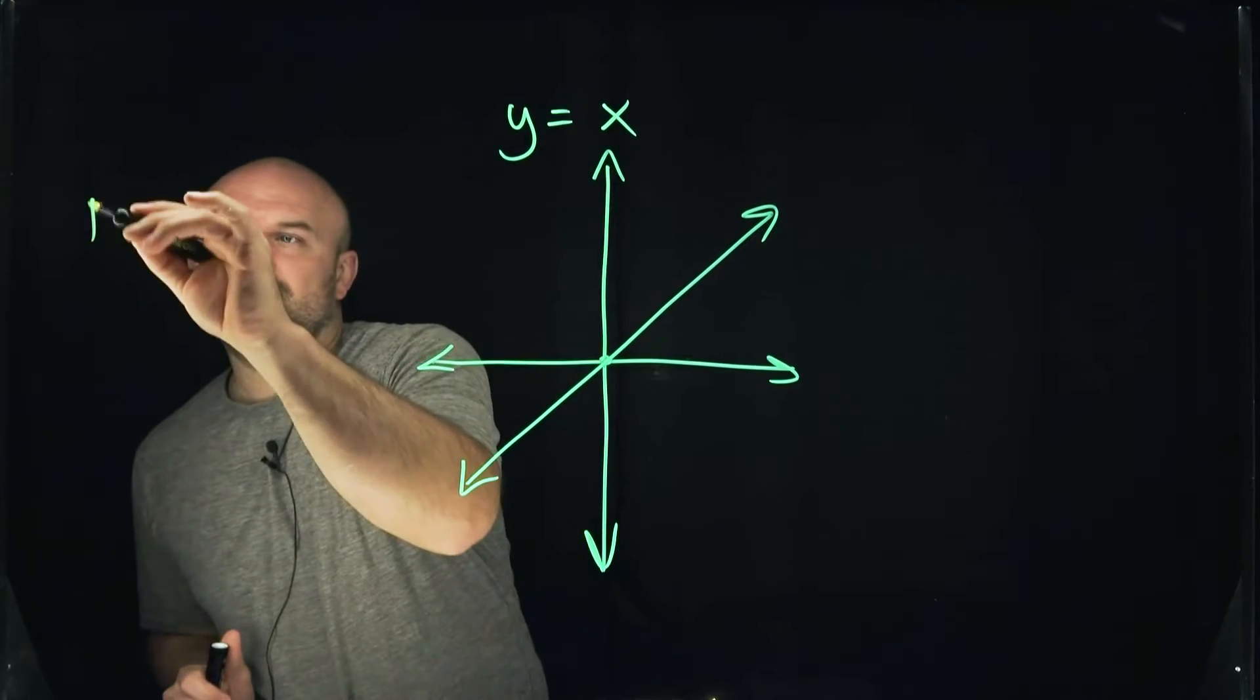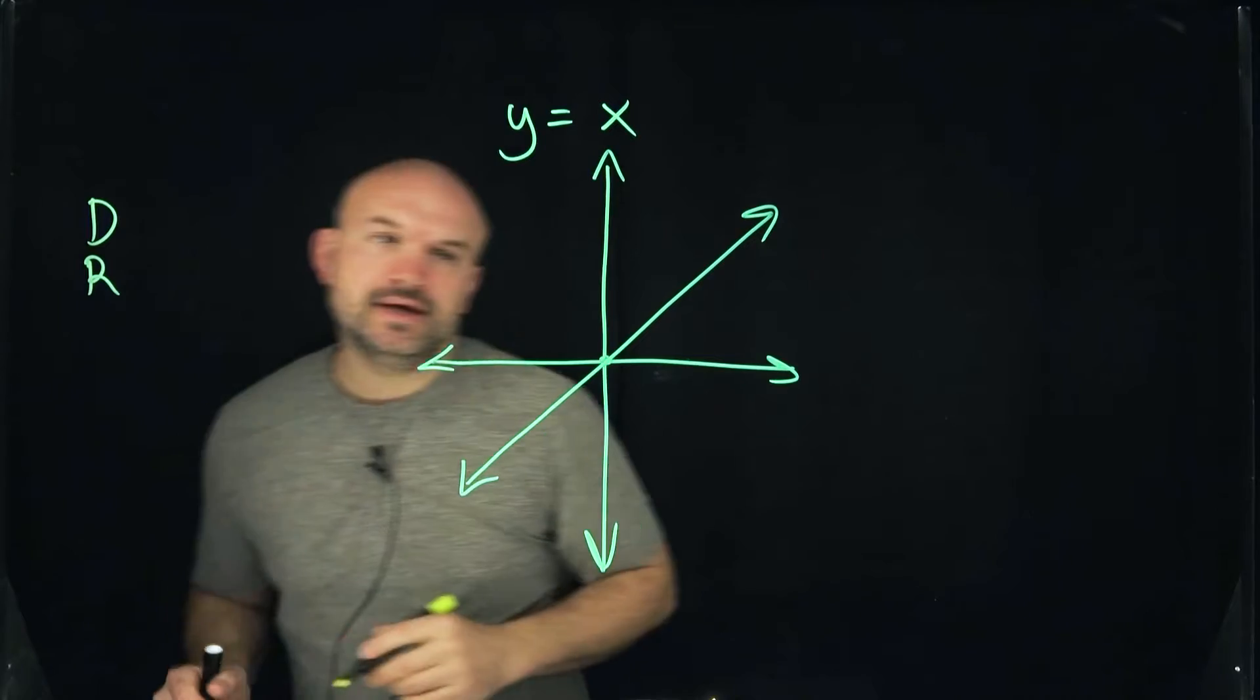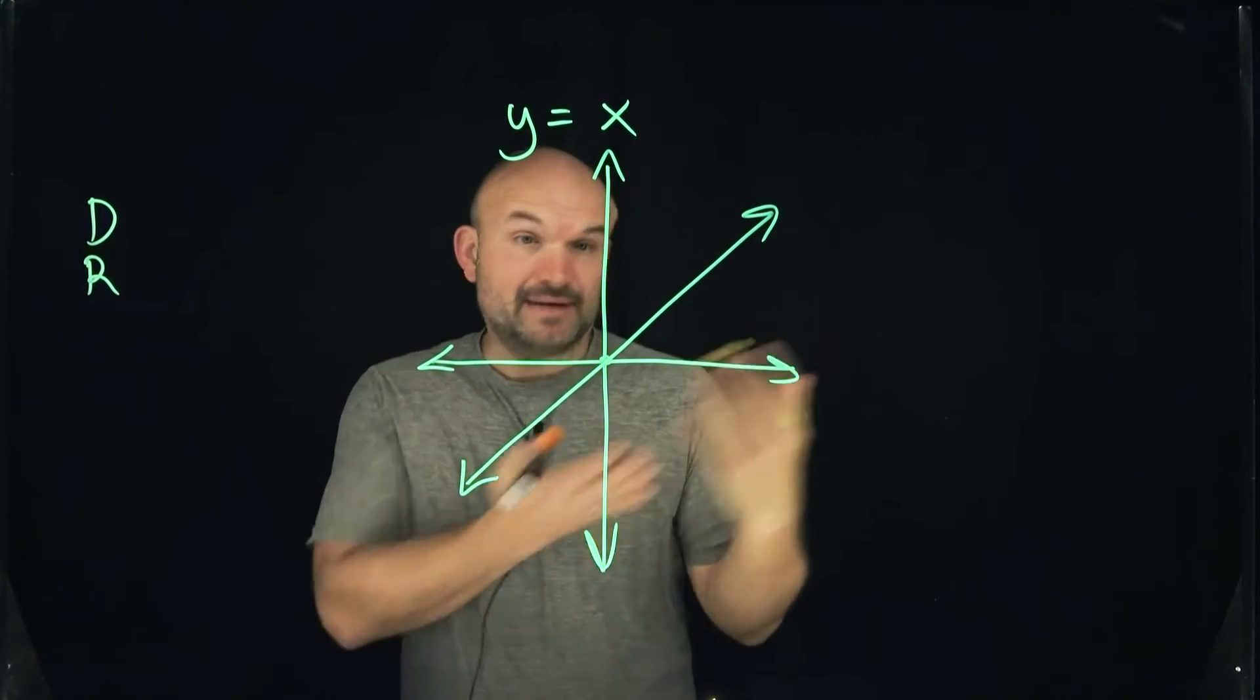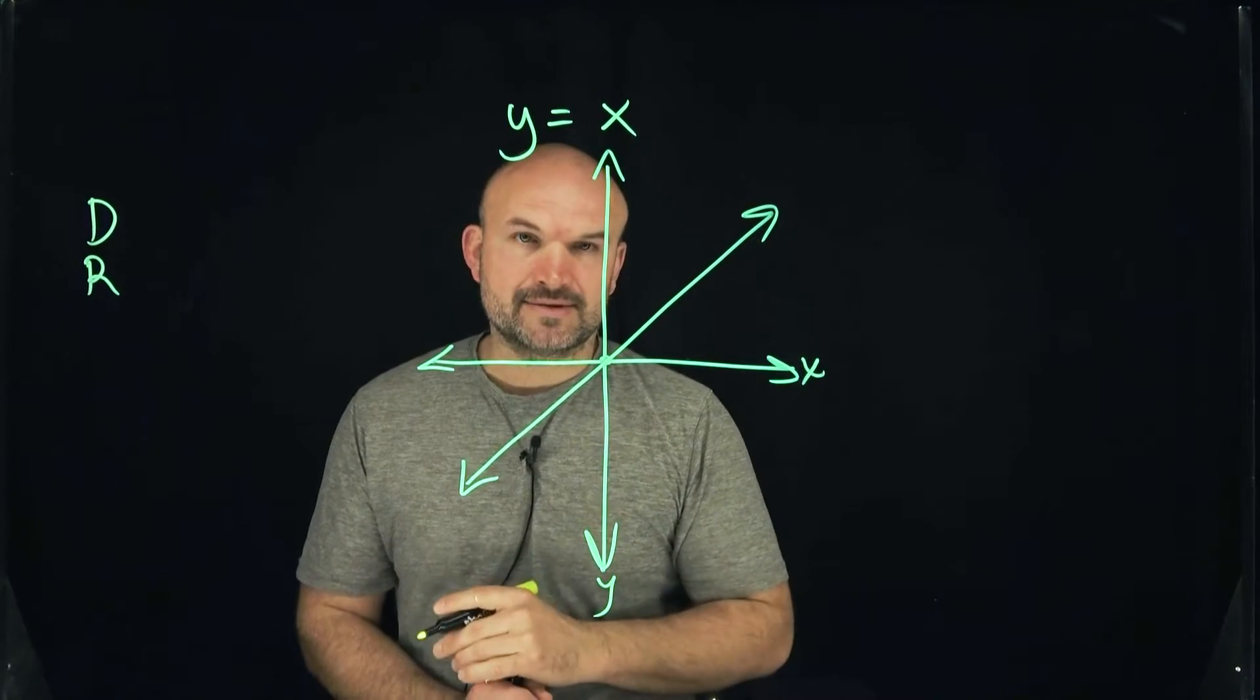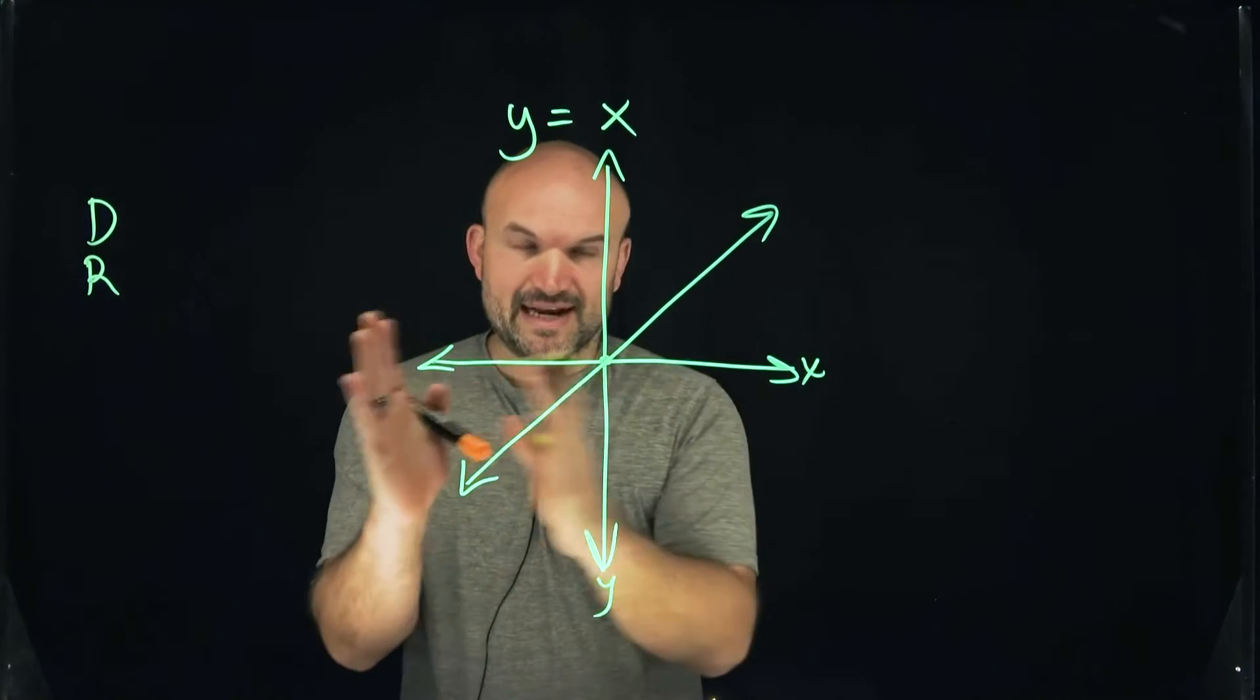The first one is going to be the domain and the range. The domain is the set of all x values that make up this graph. We can look at the x-axis and the y-axis. The domain is going to be looking at the x-axis.